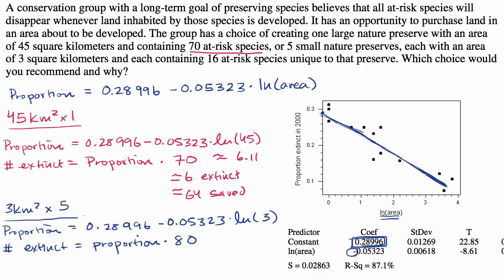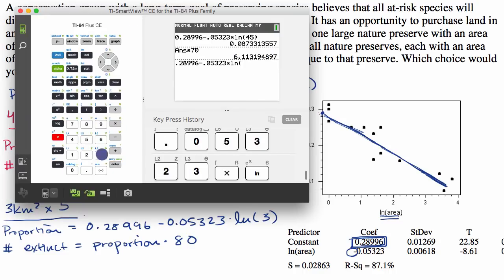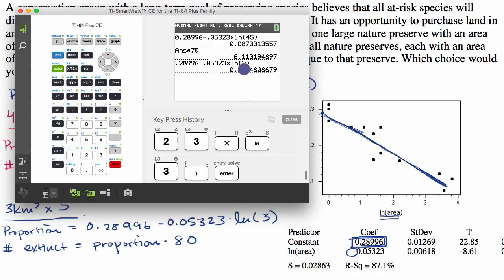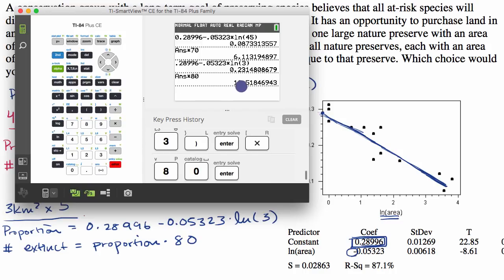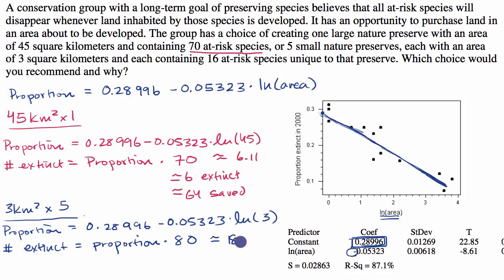Getting the calculator out again — this gives us the proportion, which is a much higher proportion. Multiplying that by 80 species gives approximately 18.52. So for the five small islands, we would have approximately 19 species extinct and approximately 61 species saved.